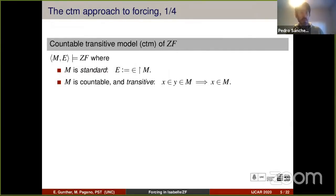A countable transitive model of ZF is a first order structure, so we have a family of sets and we have a binary relation. This first order structure satisfies the Zermelo-Fraenkel axioms. We assume moreover that M is a standard model, so the binary relation is actually the membership relation restricted to the family of sets M, and the family of sets M is countable and transitive, so elements of elements of M are in M.